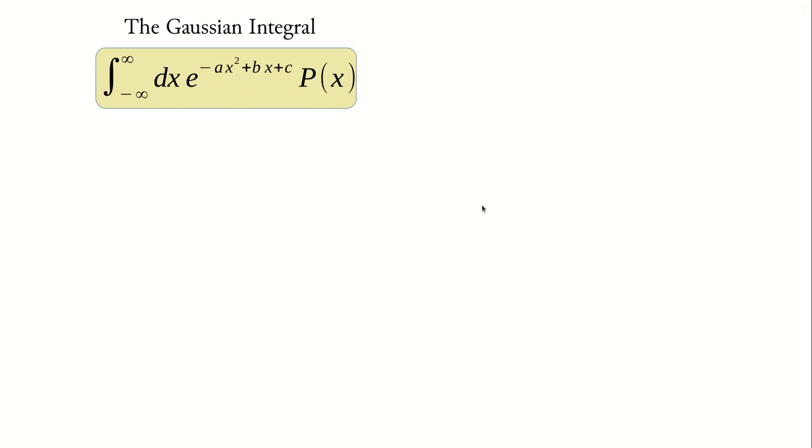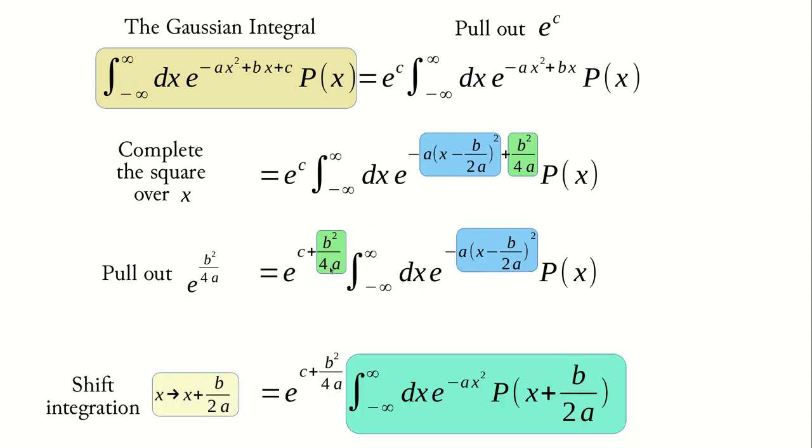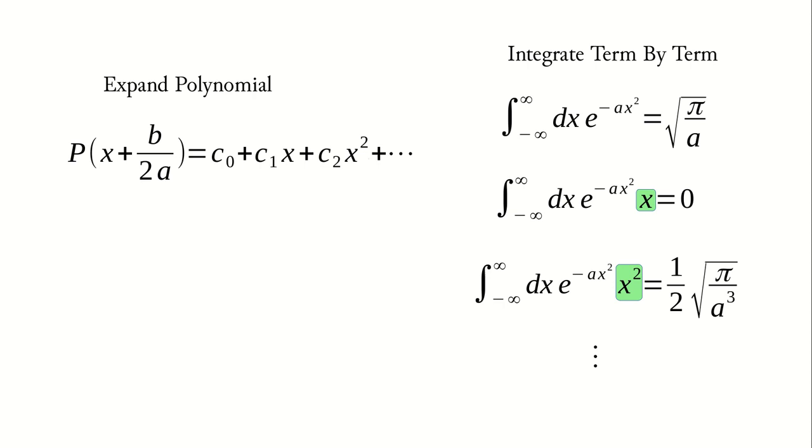If we know that we're working with a Gaussian expression, we can actually make this much faster. To speed up the calculation of the integral, we will use that we know what to do and we will allow Julia to perform these steps. Roughly speaking, what we do is the following: we first take out the exponential of c because it's a constant anyway. Then we complete the square over x. So we have one term with x and one term with b. We can pull out the extra term because it's just a constant. And then in the last step, we shift x such that we have a pure Gaussian centered over zero and now we have a shifted polynomial. The shifted polynomial can in turn be expanded in monomials, and then we can integrate term by term because we know the results of each of these integrations.